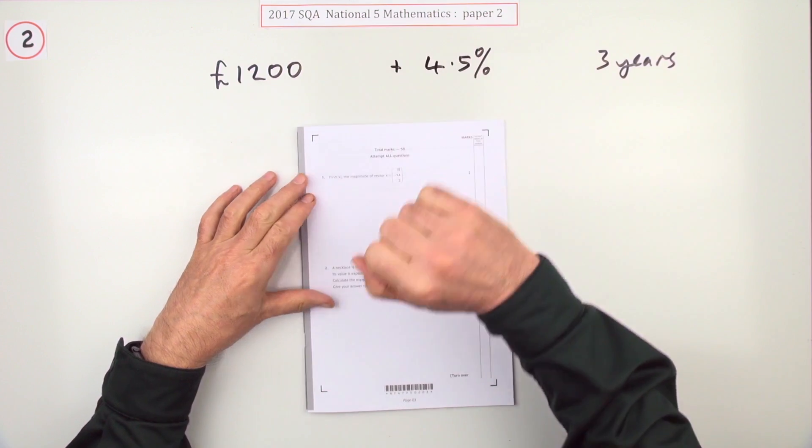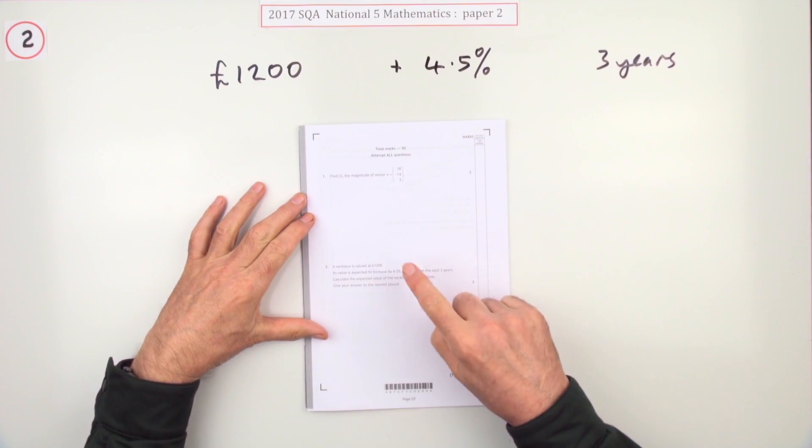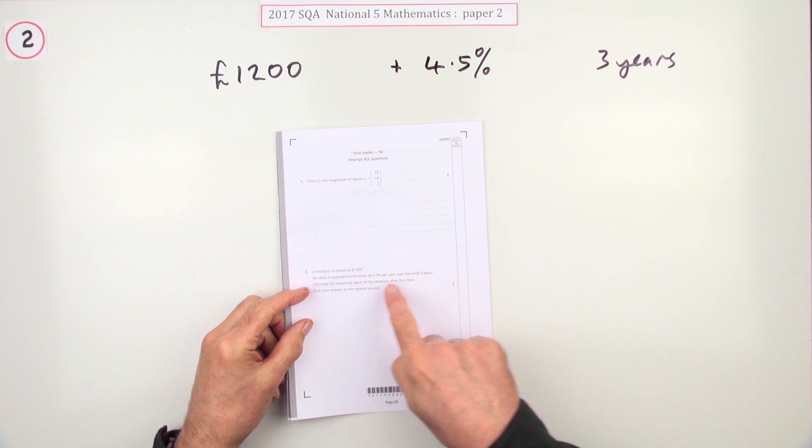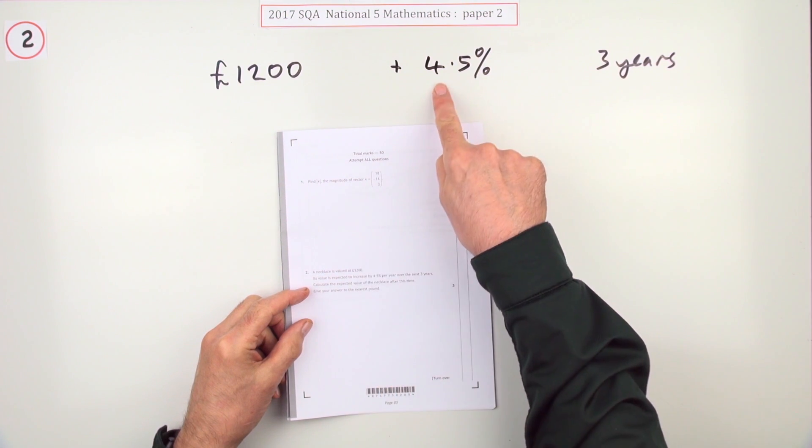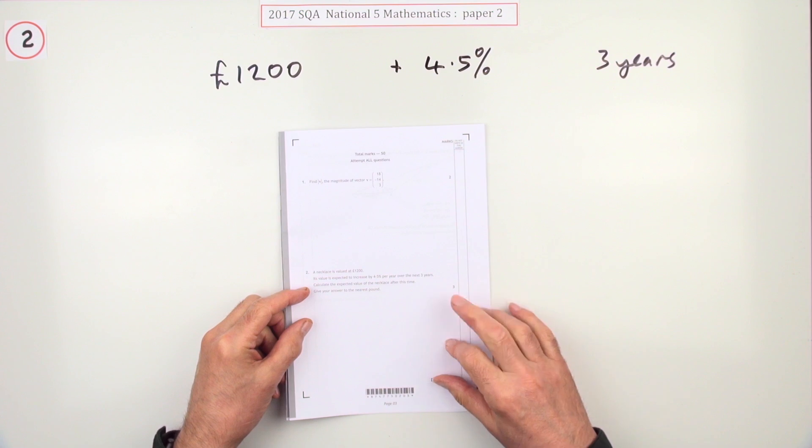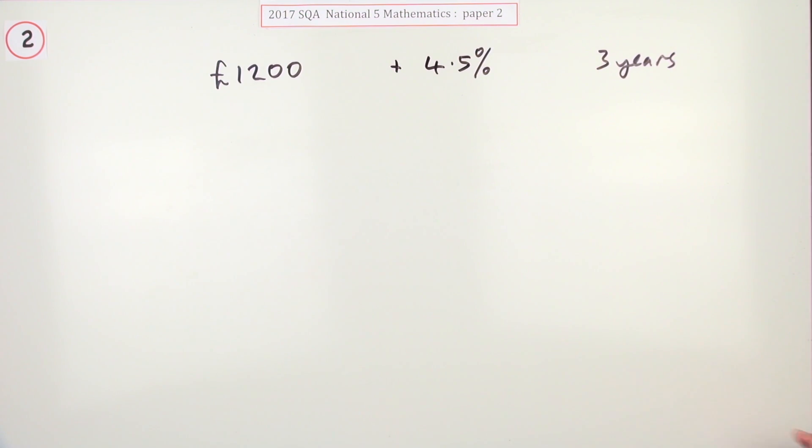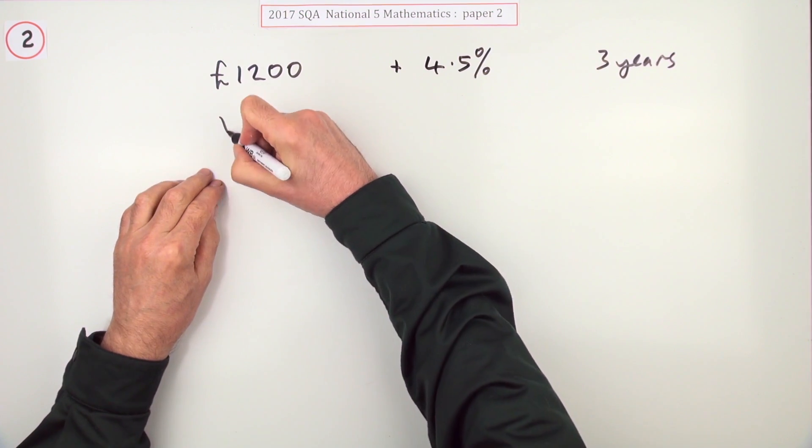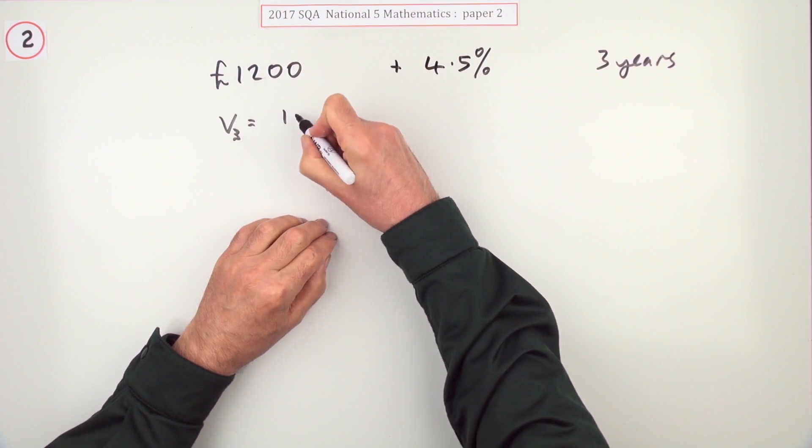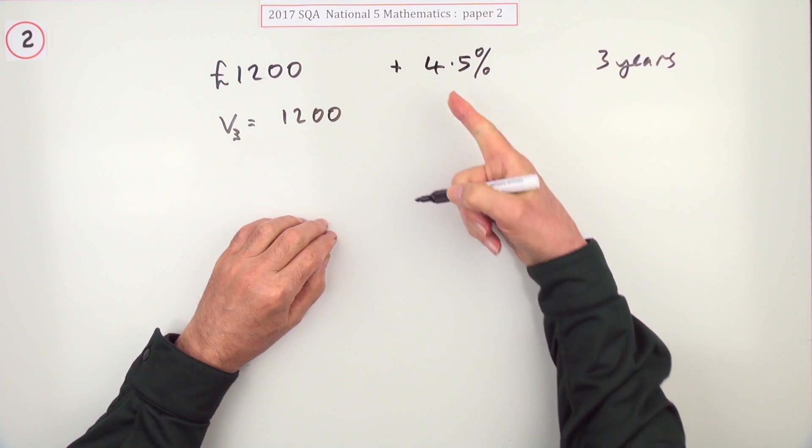Number two from paper two of the 2017 National 5. There's one that you're wanting to see - you've practiced that so many times - the percentage increase, the regular percentage increase over a number of years, the compound increase, three marks. Well, what will its value be after three years? Well, it started off at £1200.